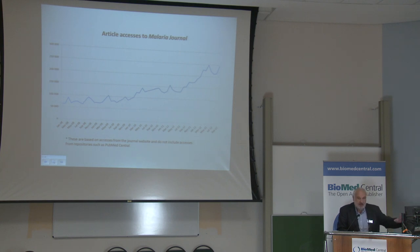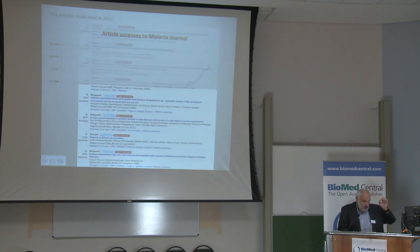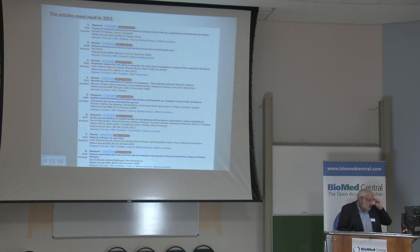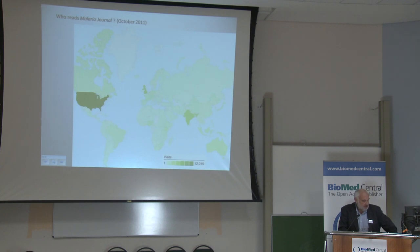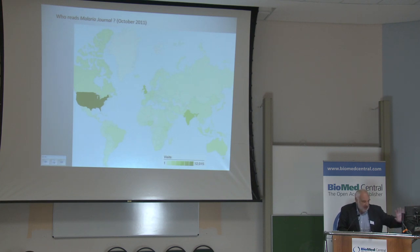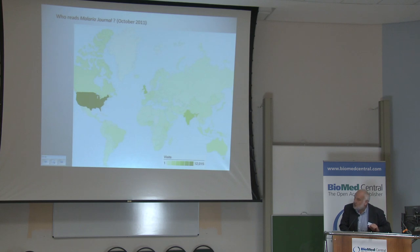Accesses are very high and increasing for the journal. The journal constantly shows highly accessed articles, and some accesses in Malaria Journal of over 7,000 are quite good compared to other journals. As for who reads the journal — US, UK, and India come up top — but Africa does read Malaria Journal, and quite well, probably almost as well as some European countries, which is quite good.